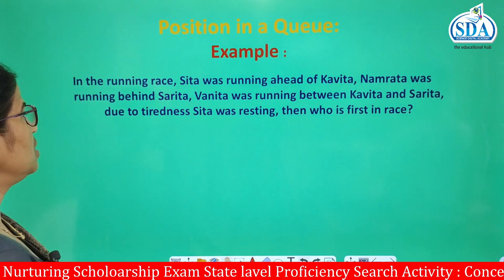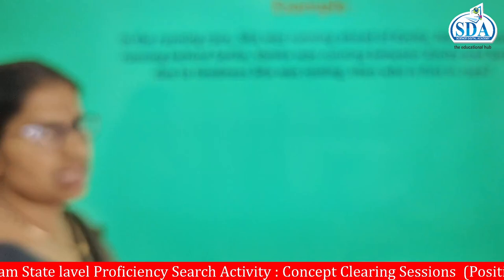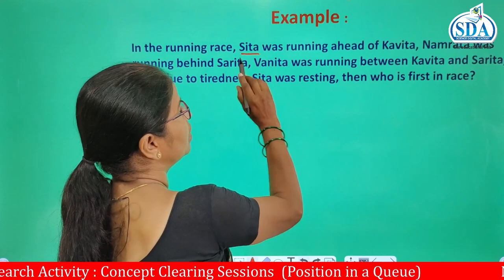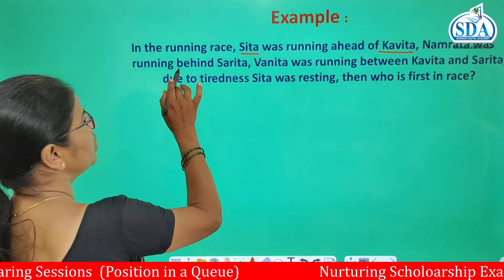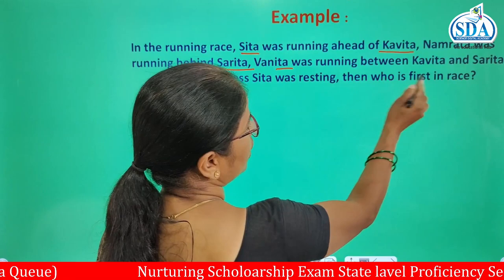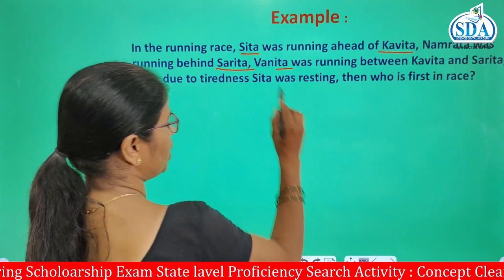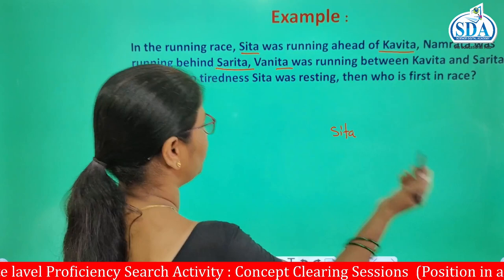Here is an example. In a running race, Sita was running ahead of Kavita. Namrata was running behind Sarita. And Vanita was running between Kavita and Sarita. We should mention Sita first — Sita is running ahead of Kavita, so then comes Kavita.